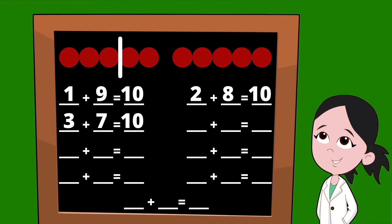Let's slide that line over to the right once more. To find our first partner, let's count the dots on the left side of our line. That's right, there are four dots on the left side of our line, so we'll start with the number four. To the right of our line, we have six dots, so our second partner is the number six. Four plus six equals 10.